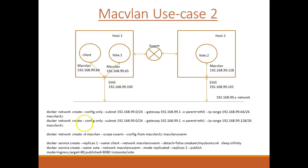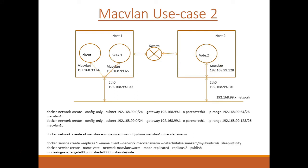The second use case is a completely containerized use case. Here we have two hosts which are part of the swarm. I have a vote service with two replicas, and a client service with one replica which is going to access the vote service. This use case requires Docker 17.06. Prior to 17.06, we could not run a node-local network or create a swarm service on a node-local network. MacVLAN is a node-local network, and with Docker 17.06 we can create a swarm service on a node-local network like MacVLAN.